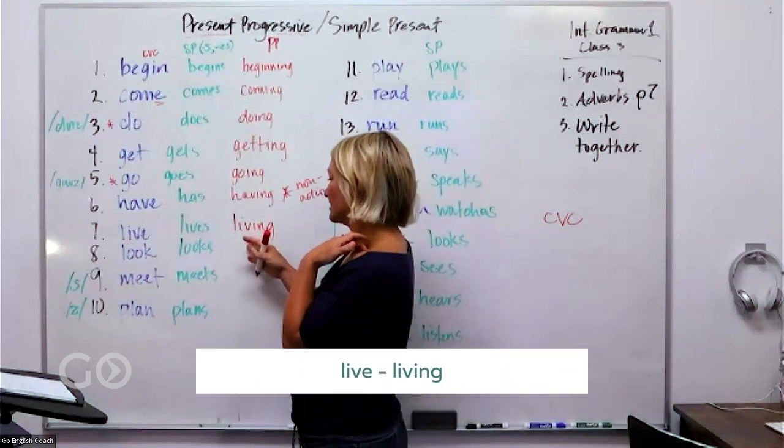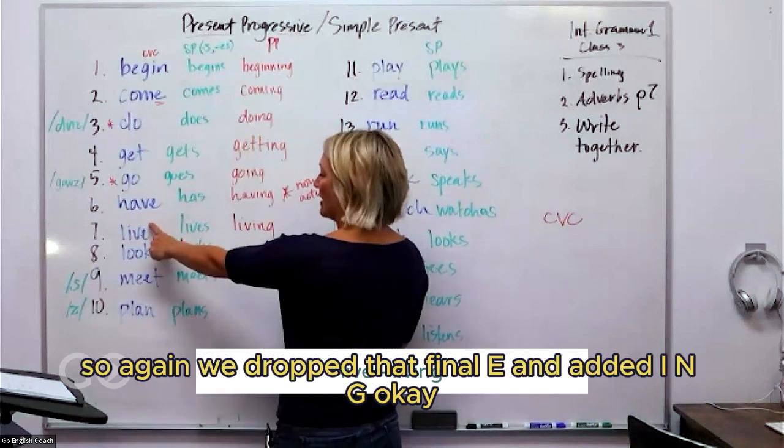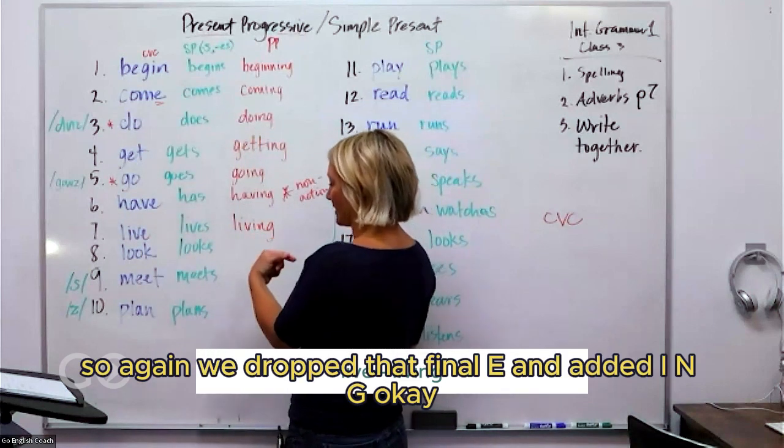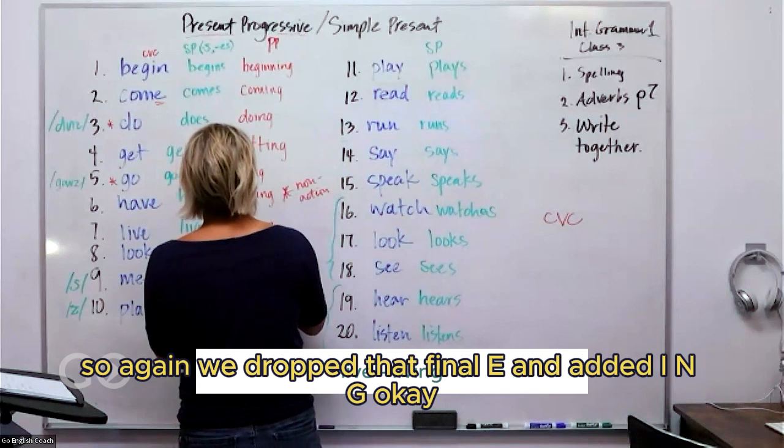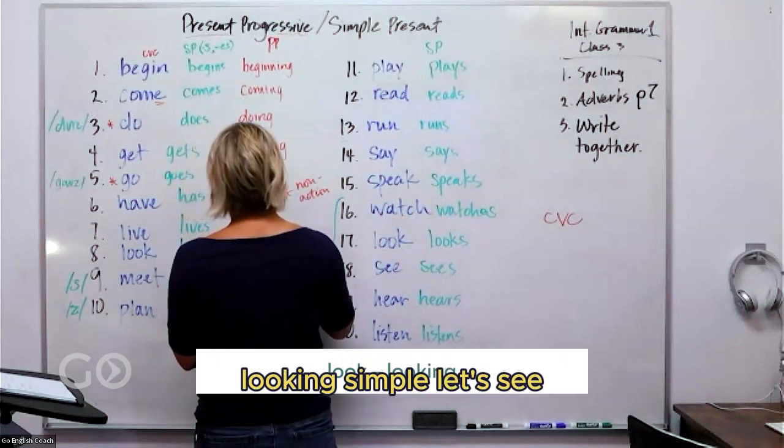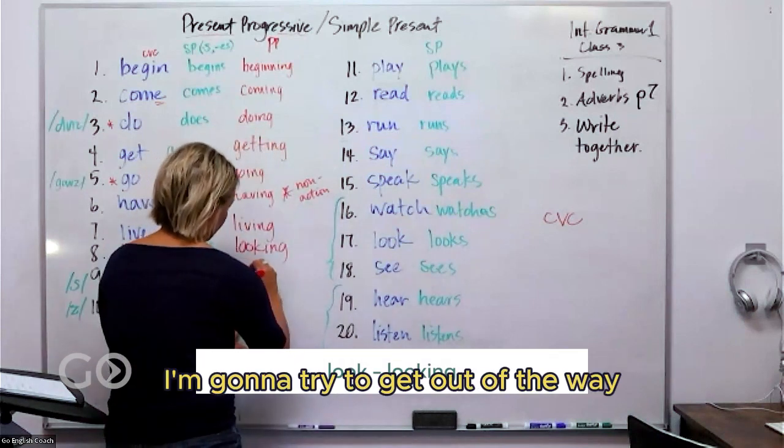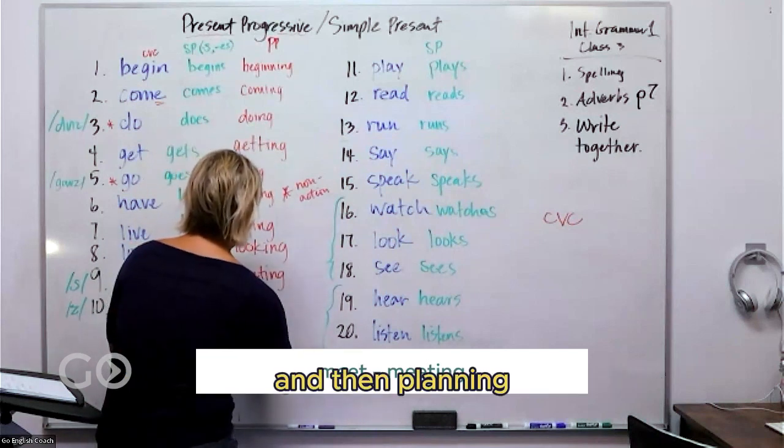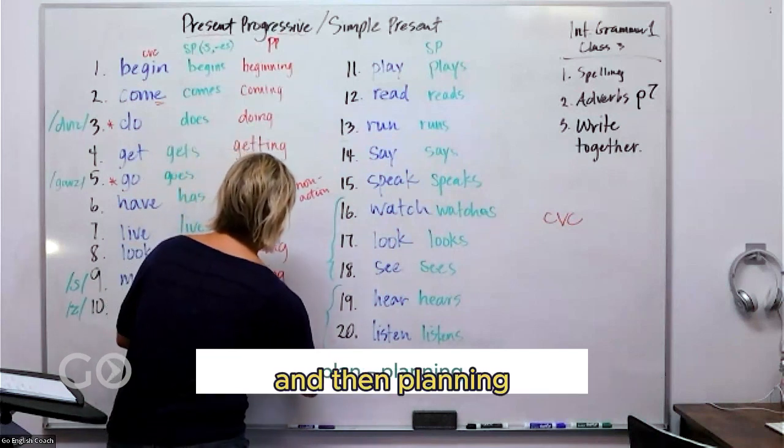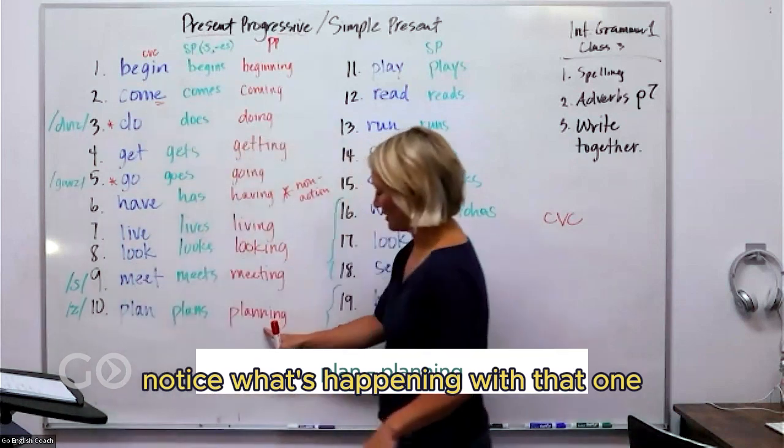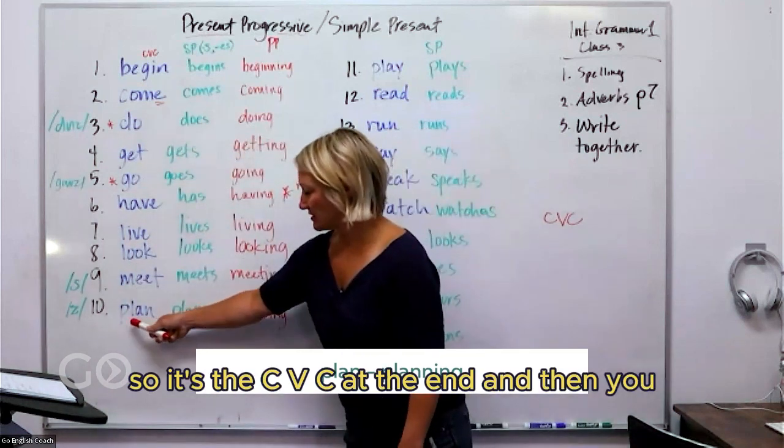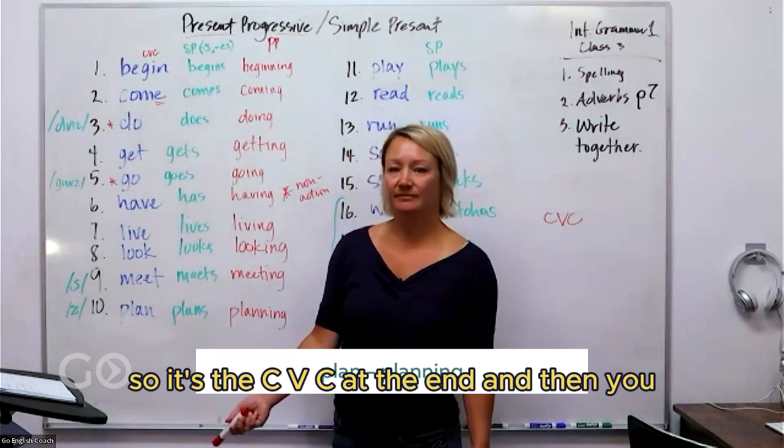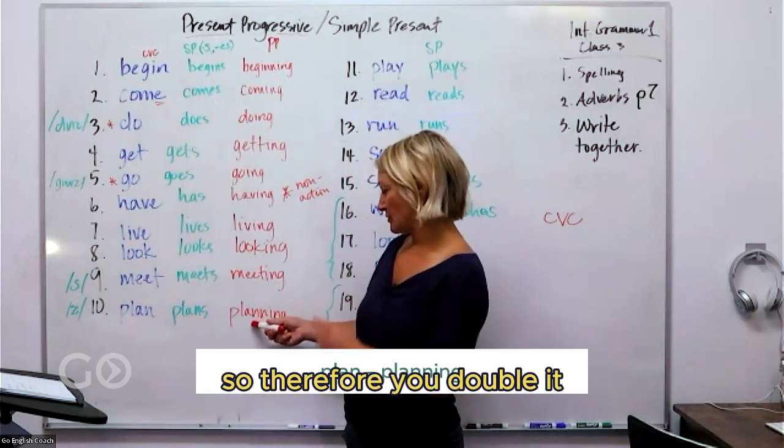Looking, simple. Let's see, I'm going to try to get out of the way so you guys can see this. Meeting is there, and then planning. Notice what's happening with that one. So it's the CVC at the end, and then you double it. So it doesn't matter that there's another consonant in the beginning, we just go CVC is at the end, so we use that rule.